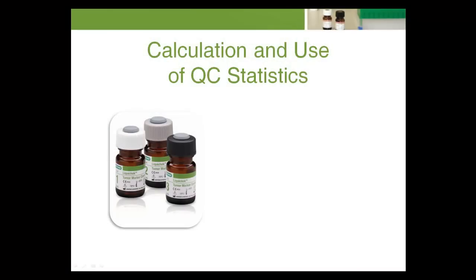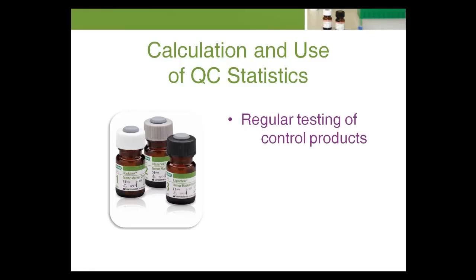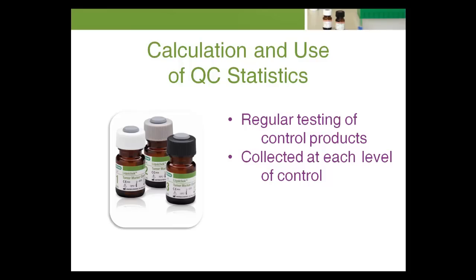QC statistics for each test performed in the laboratory are calculated from the QC database collected by regular testing of control products. The data collected is specific for each level of control. Consequently, the statistics and ranges calculated from this data are also specific for each level of control, and reflect the behavior of the test at specific concentrations.